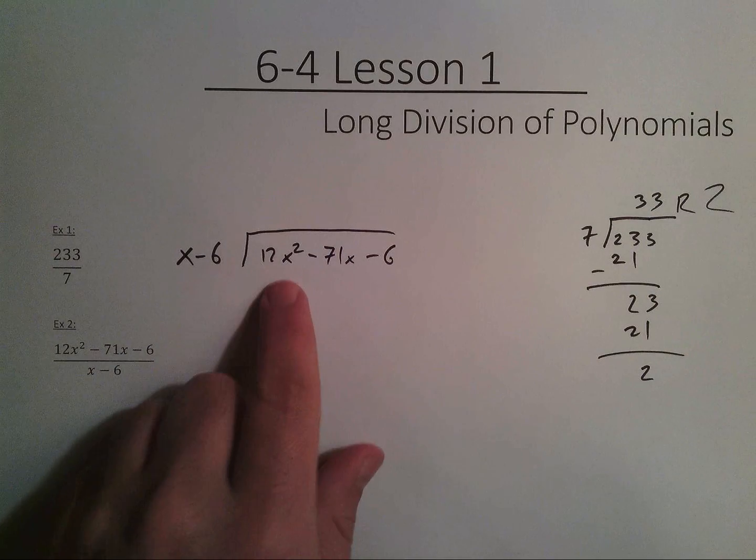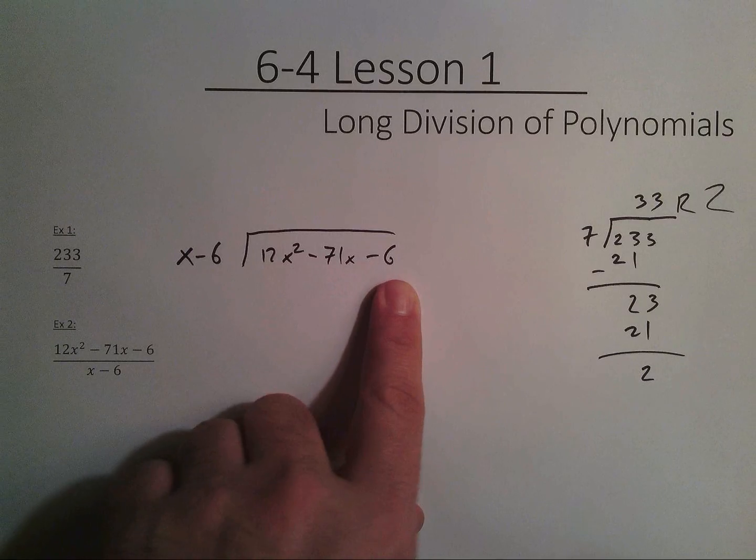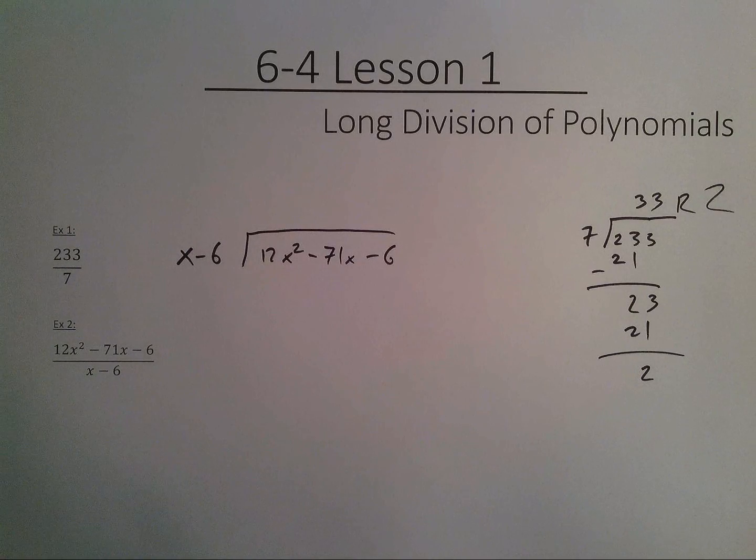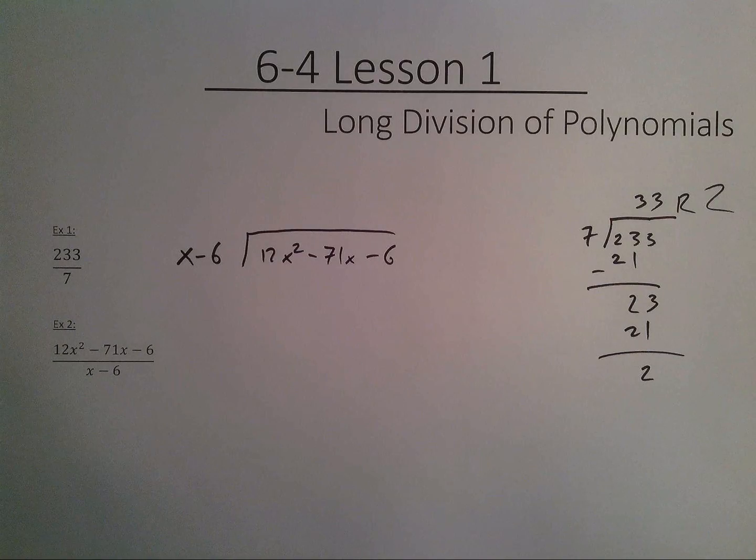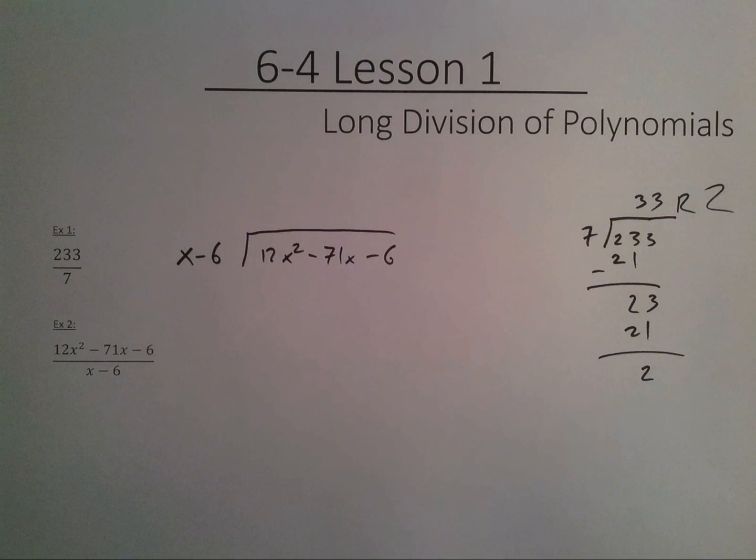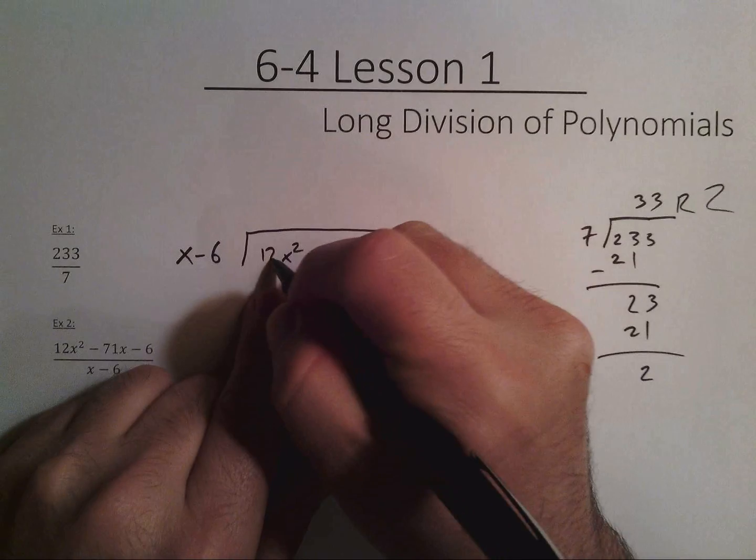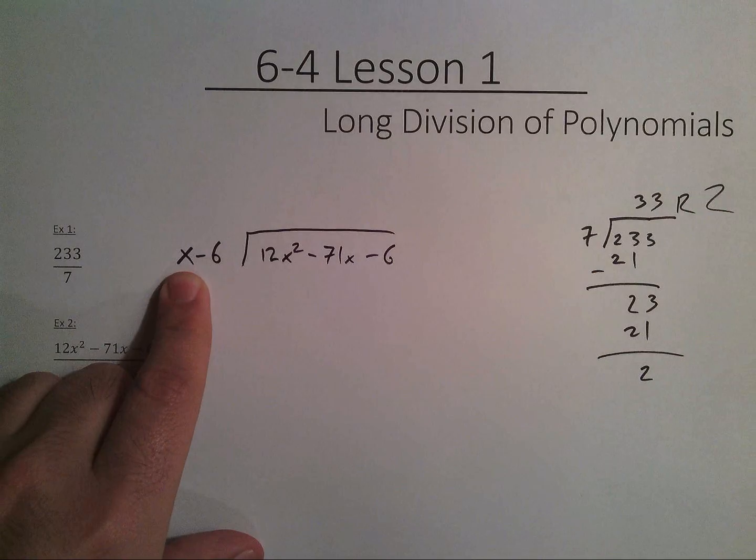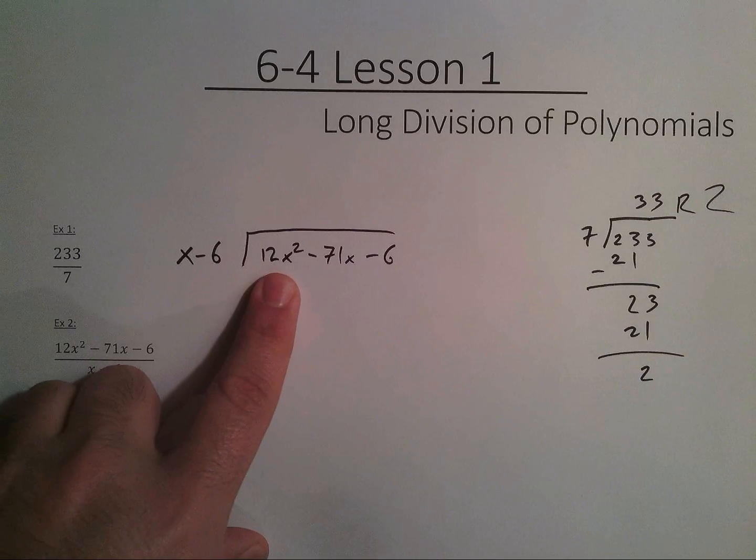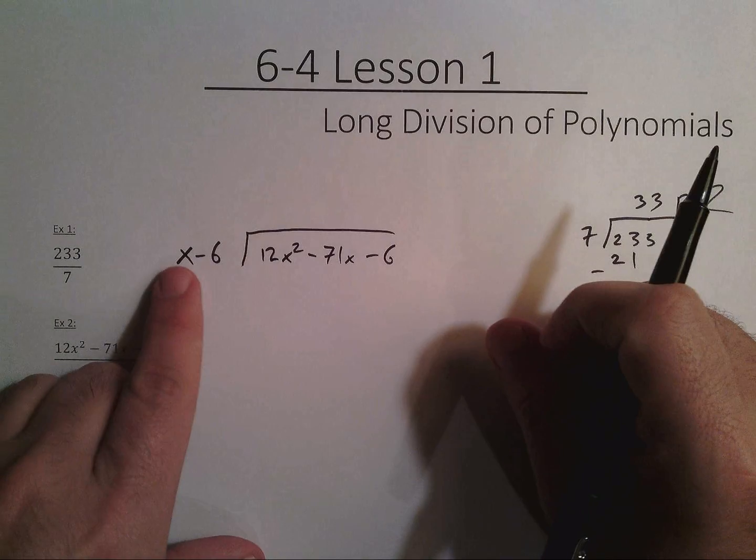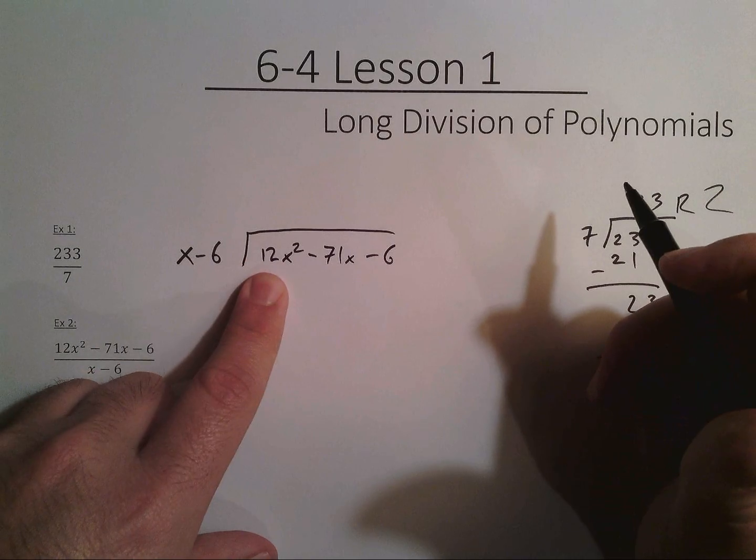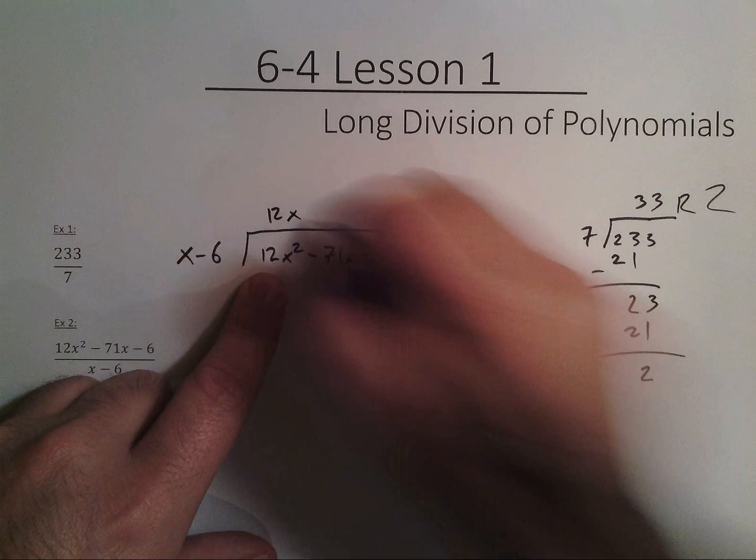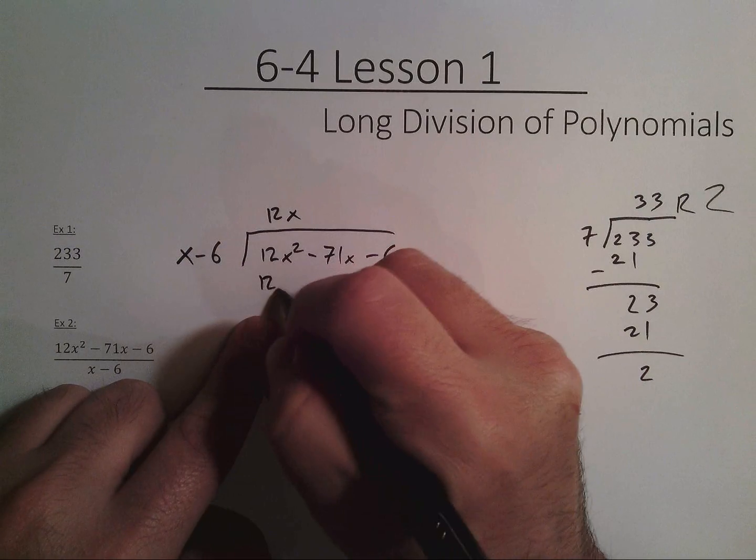Take note that I go from a second power to a first power to a no power. You always have to keep it in order. And in the next video for lesson 2, part 2 on 6-4, I'm going to talk about what happens if you're missing things. At any rate, so I'm only going to look and see if whatever my coefficient of the outside goes into the inside. So does 1x go into 12x squared? It does go into 12x squared. It goes in there 12x times with 12x squared.